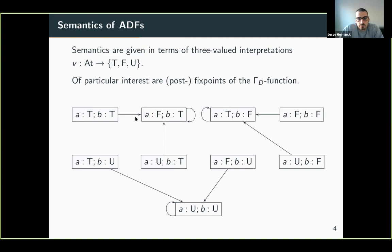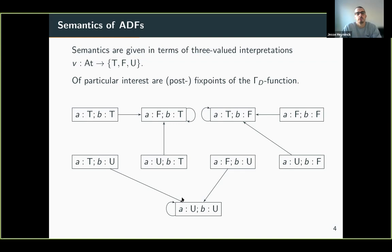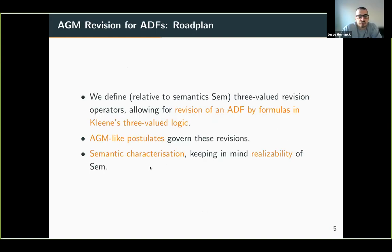This is a graphical representation: we have the gamma function mapping three-valued interpretations to three-valued interpretations, and the fixed points are of particular interest. Here this would be the preferred semantics, and this would be the grounded interpretation. That's really all I can say now about the semantics of ADFs.